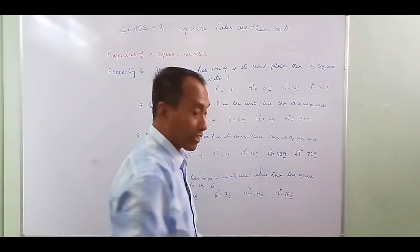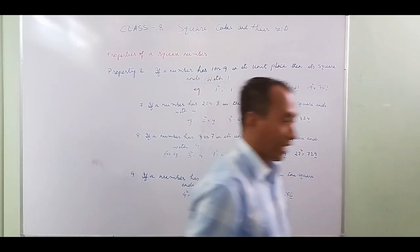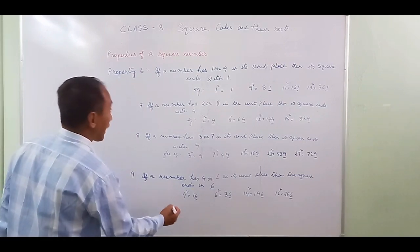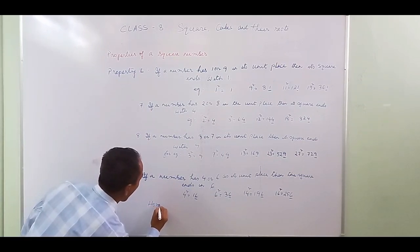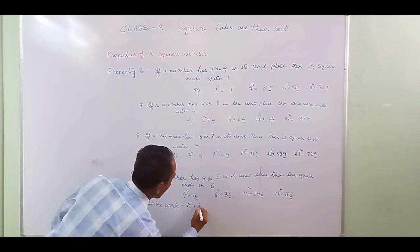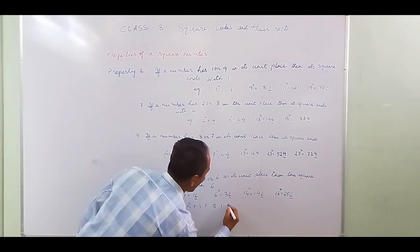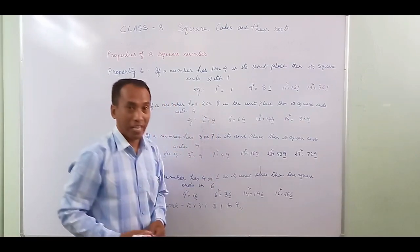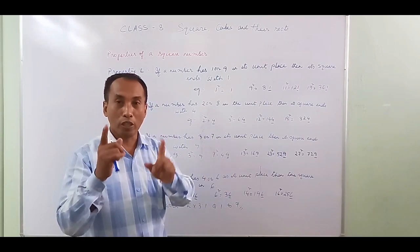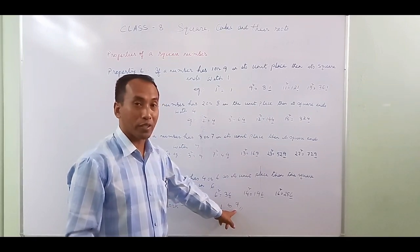After completing all these topics, you can do Exercise 3.1 as your homework — question numbers 1, 2, and 7. When vacation ends, I am going to ask you about all these properties and check all the questions of Exercise 3.1.